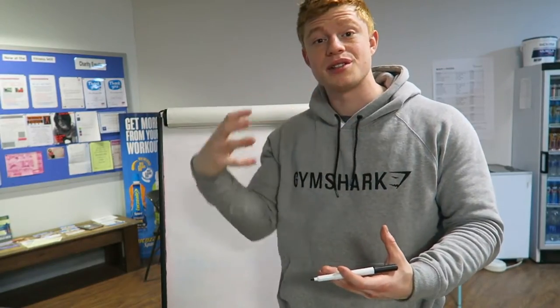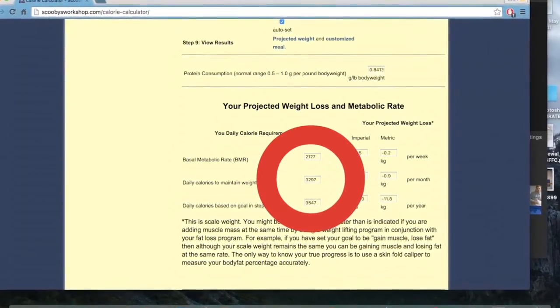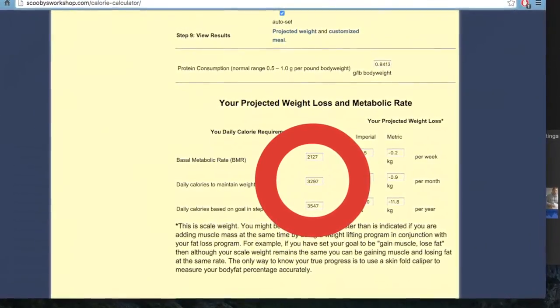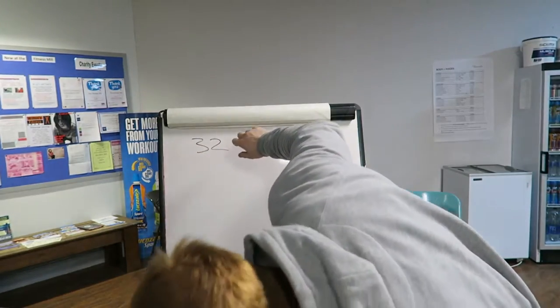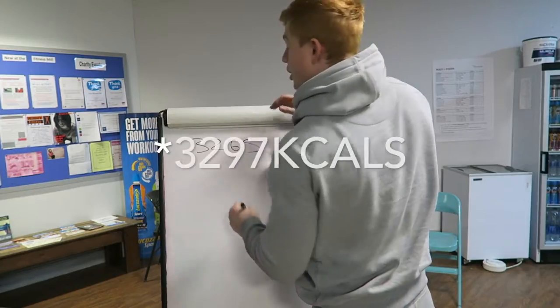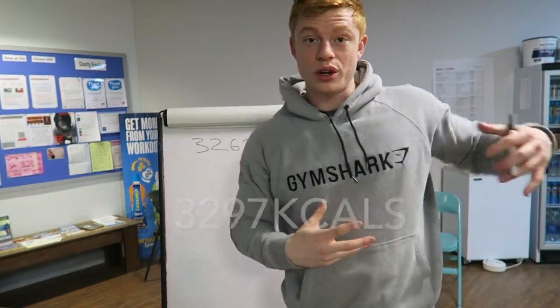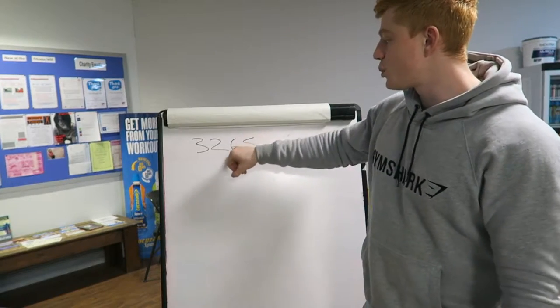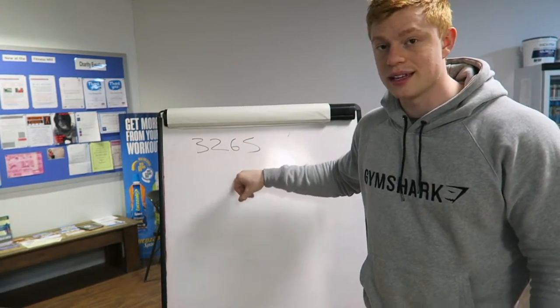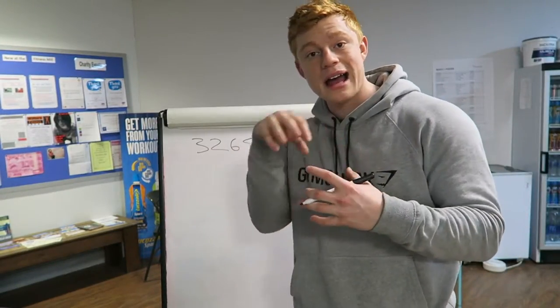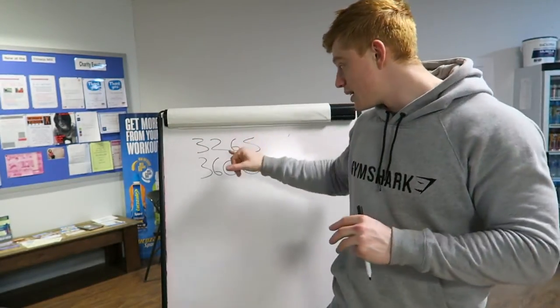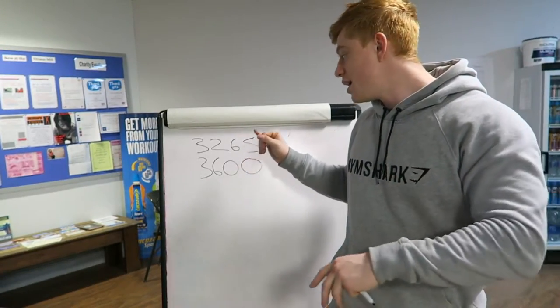As you see me putting in my details, I've selected clean bulk, which gives me a calorie surplus. In the middle box right there, it shows a total of 3,265 calories. So to maintain my weight, to not lose or gain weight, I need to eat 3,265 calories a day. But we're not trying to maintain our weight, we're trying to gain weight, add muscle, and make sure that weight keeps going up.